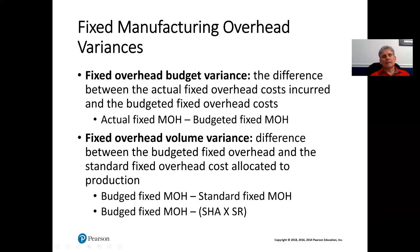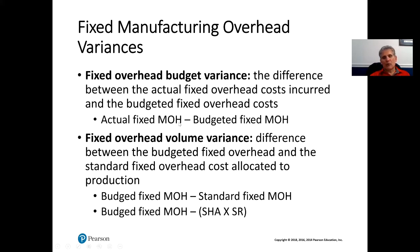Now we move on to fixed manufacturing overhead variances, which we also break down into two categories. The fixed overhead budget variance is the difference between the actual fixed overhead costs incurred and the budgeted fixed overhead costs — formula: actual fixed MOH minus budgeted fixed MOH. The fixed overhead volume variance is the difference between the budgeted fixed overhead and the standard fixed overhead costs allocated to production: budgeted fixed MOH minus (standard hours allowed × standard rate).